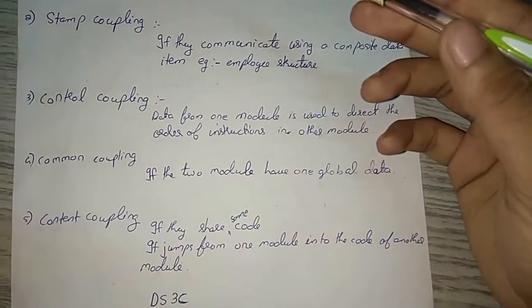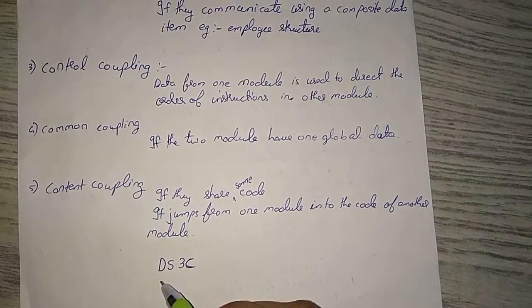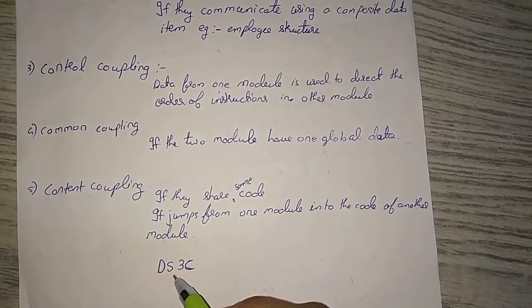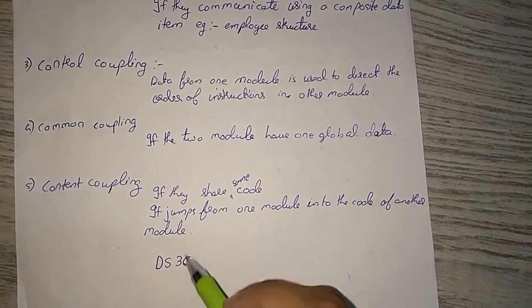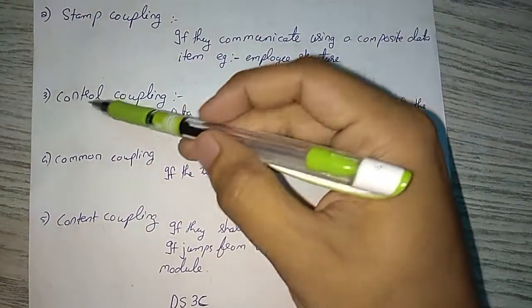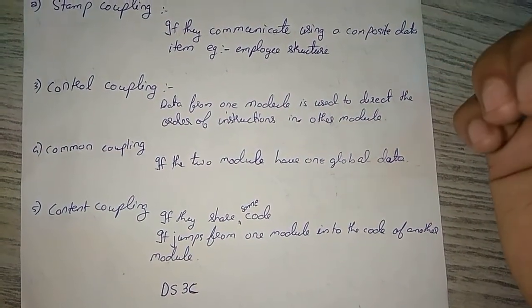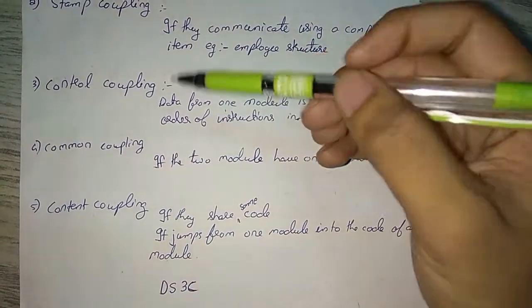An easy way to remember all these five types is DS3C. D stands for data, S stands for stamp, and there are 3 C's: control, common, and content. So these three C's we have to remember.